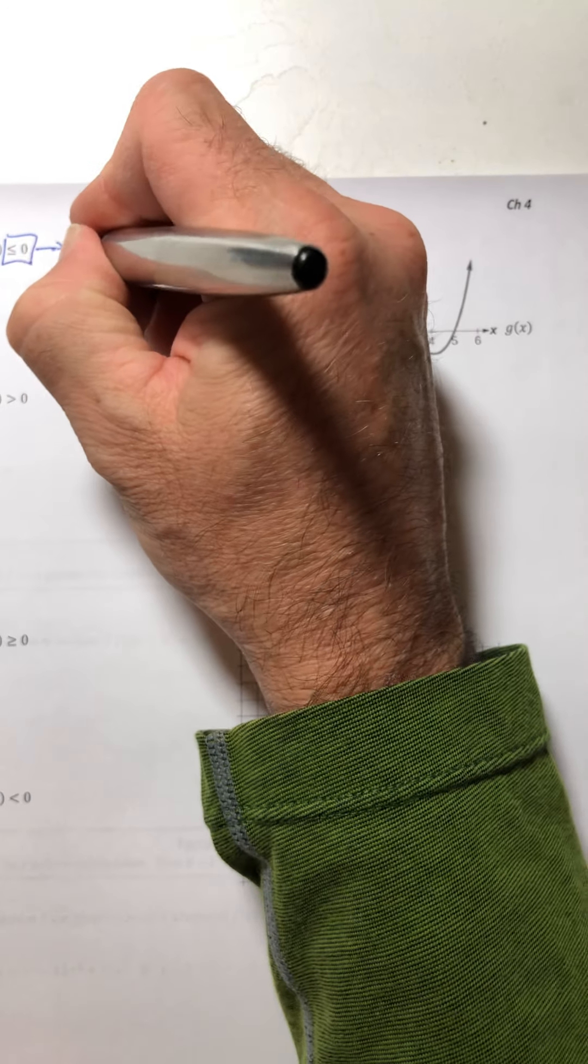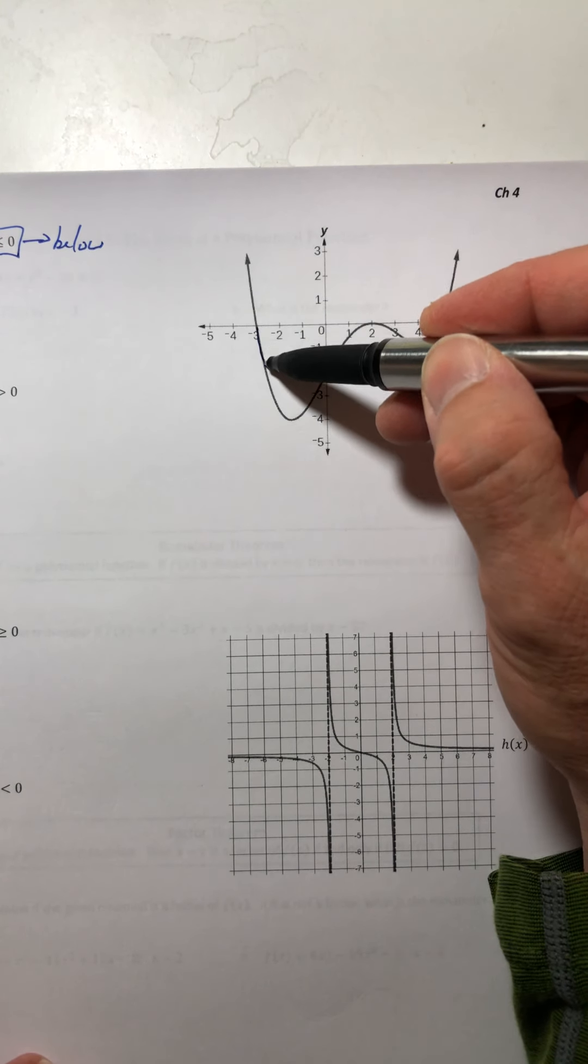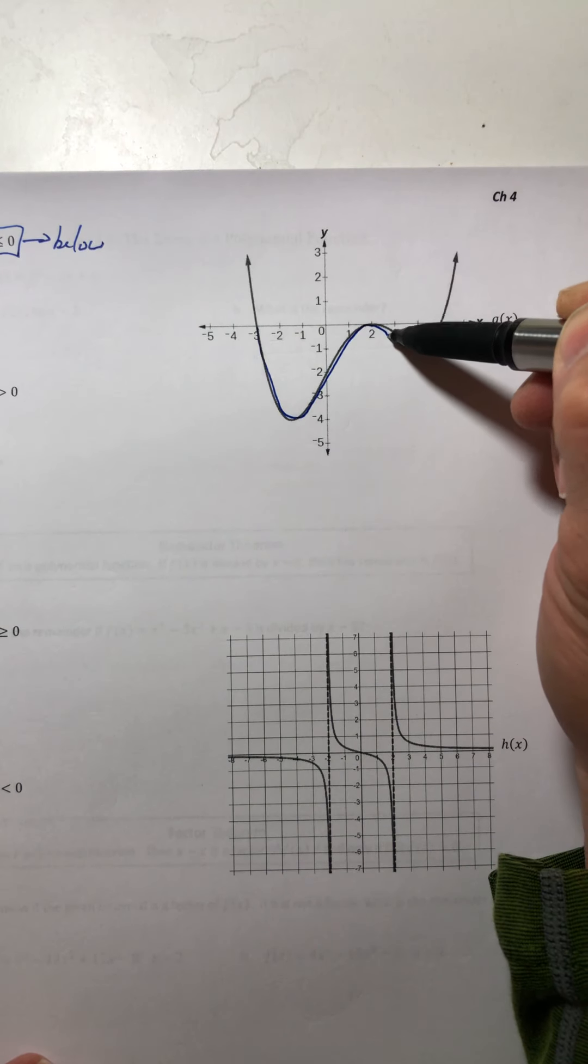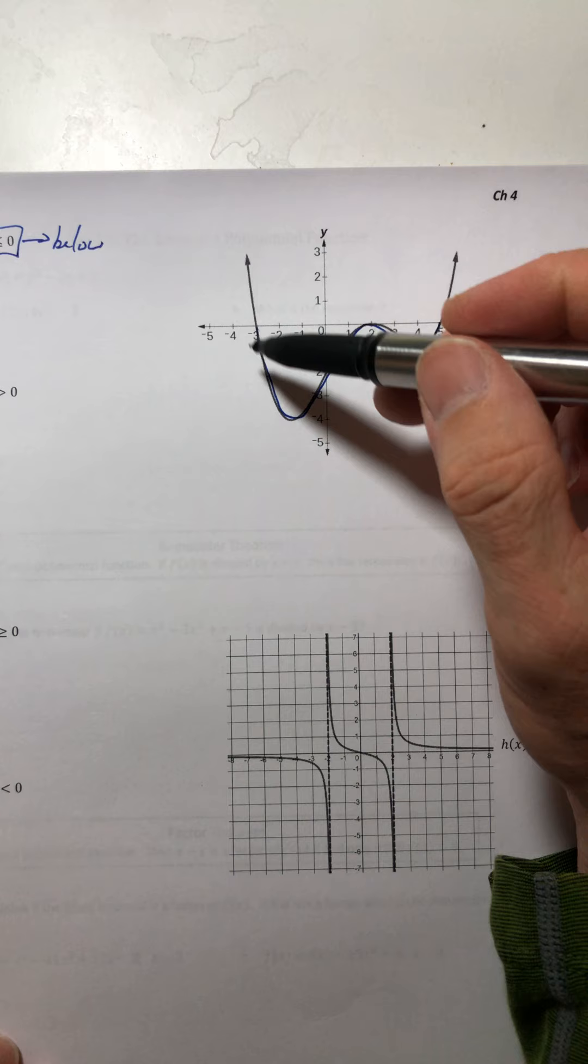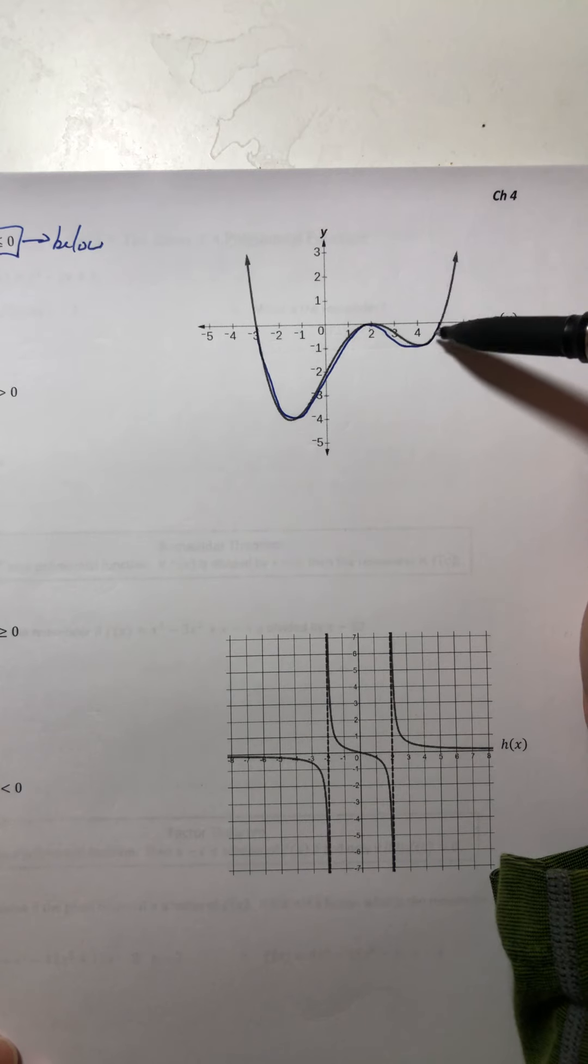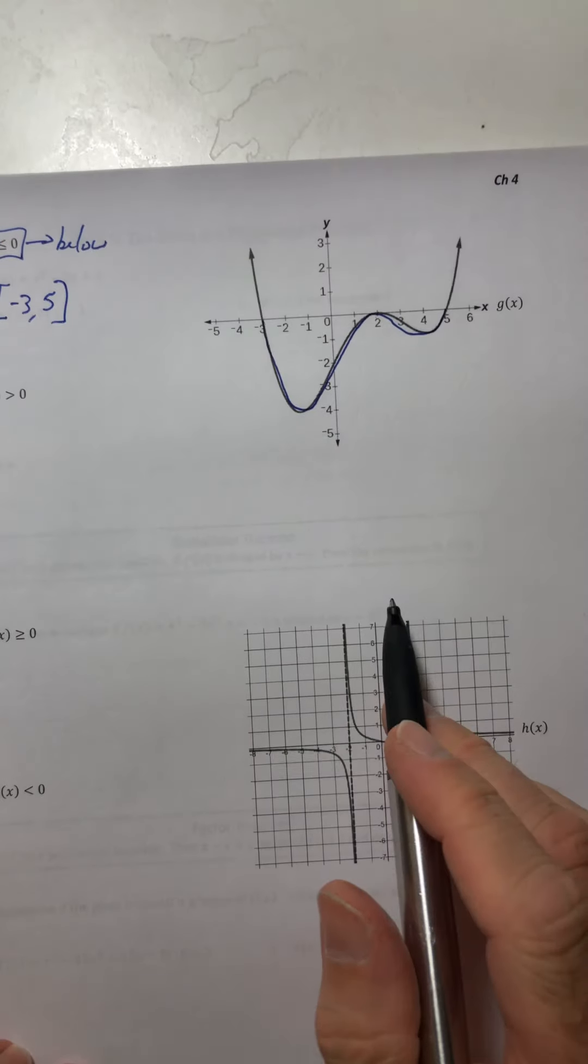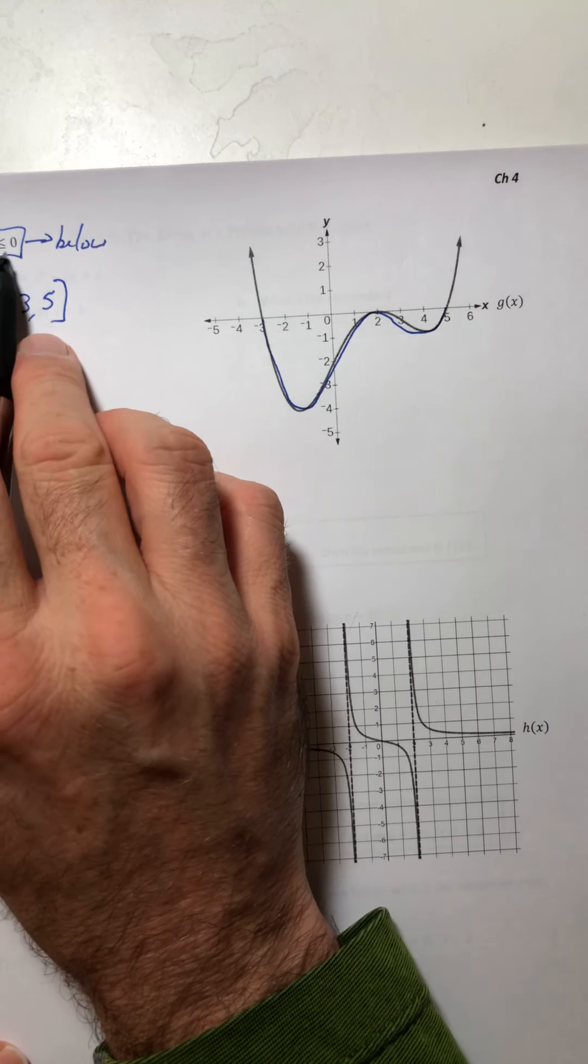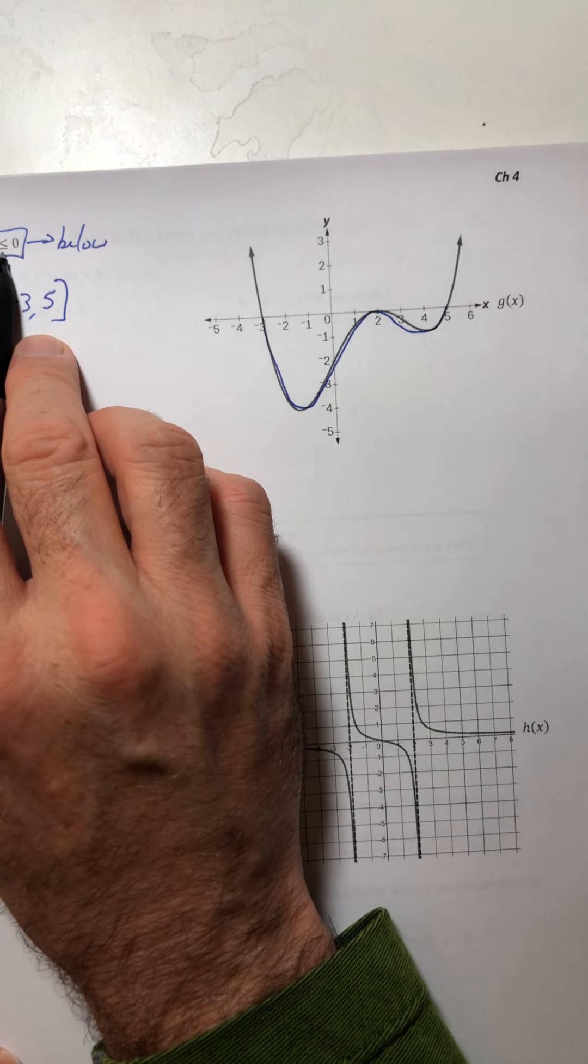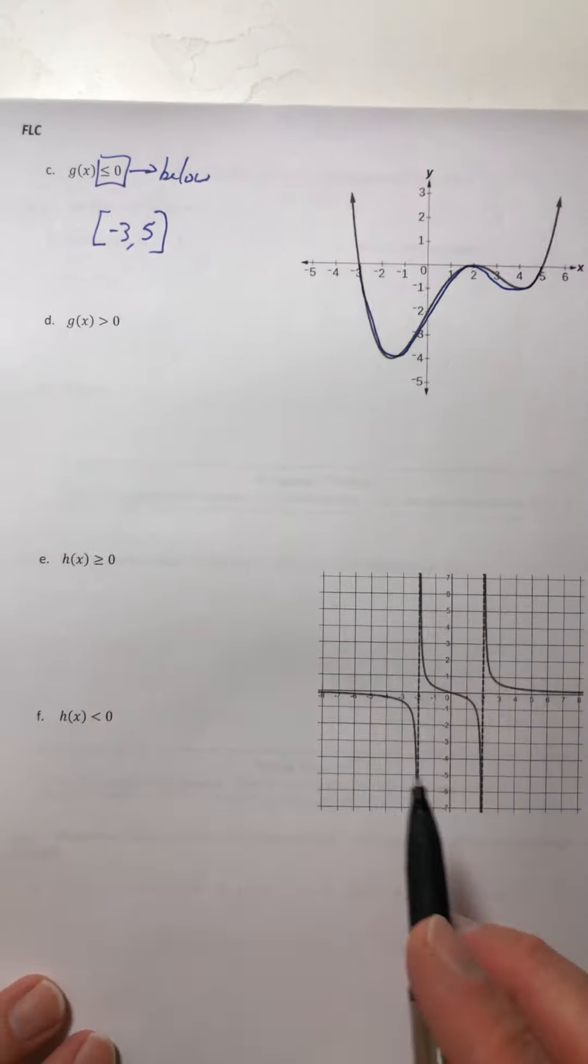So g of x is less than or equal to zero. So that means I want where it's below your x axis. So that would be that whole section right there, because at the two, it doesn't go above it stays below like it hits the x axis, and then bounces back down. So this whole region from negative three to five, is below the x axis. Now the two, that's where it equals zero, which is okay. I want it, it can't equal zero. If the equal bar was gone, then I'd have to leave two out from the interval.